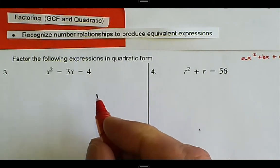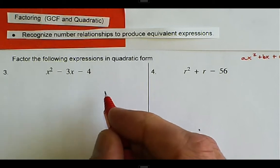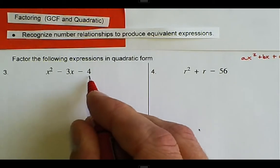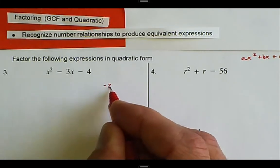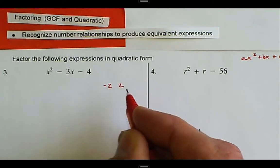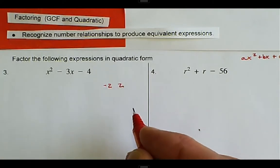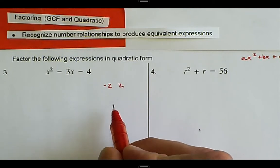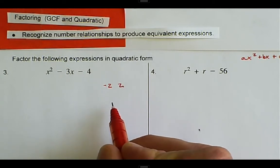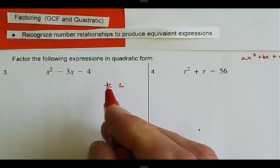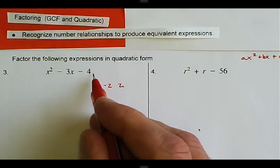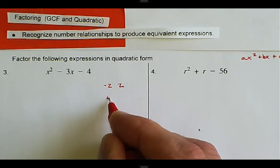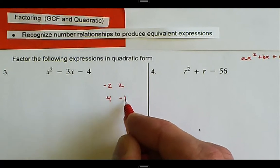Some numbers that could possibly multiply to give us negative four: we could have negative two and two, or we could have negative four and one, or we could have four and negative one, or positive one and negative four.